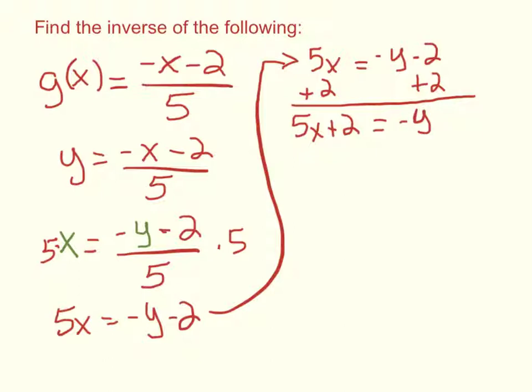Now the only catch is we still have a negative there, so I'm going to divide by a negative 1. And remember we divide the entire other side by negative 1. So y equals negative 5x minus 2.